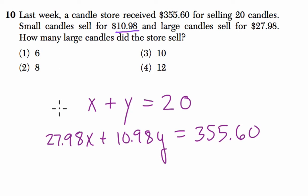So I'm going to cancel out Y and multiply everything in my first equation by negative 10.98. That will allow me to cancel out the Y variables.